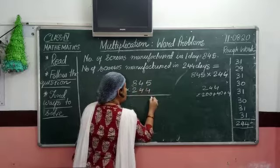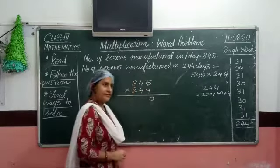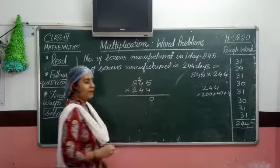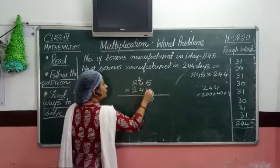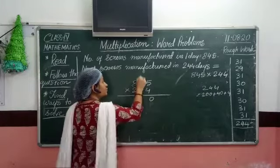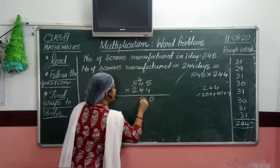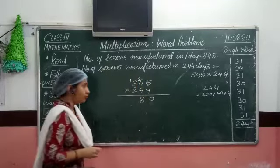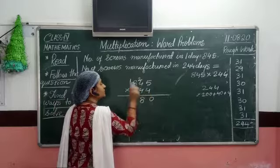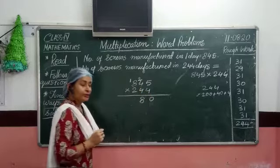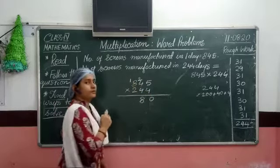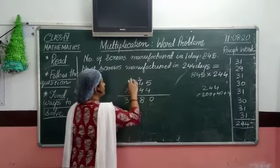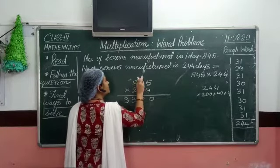4 fives are 20, and 2 is carried over. Now 4 fours are 16; 16 plus 2 is 18, and 1 is carried over. Now 8 fours are 32; 32 plus the carried over 1 gives you 33. So the first step — multiplying 845 by 4 ones — is done, giving 3380.